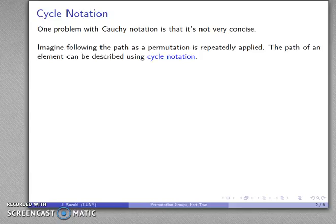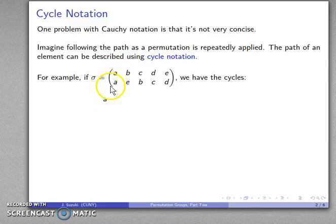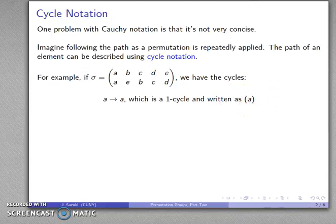The path can be described using what's called cycle notation. For example, if I have a permutation written in Cauchy form, we can identify the following cycles. I can take the element A and think of the permutation as a replacement table. A gets replaced with A — nothing exciting happens there. This is what we might call a one-cycle, a cycle of length one, and I write this by including the entire cycle inside a set of parentheses.